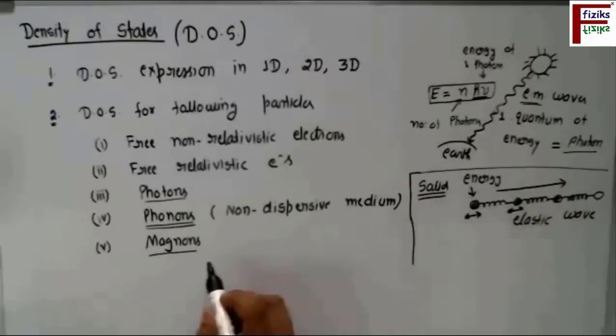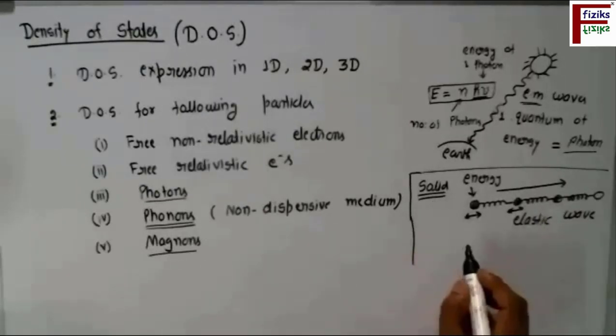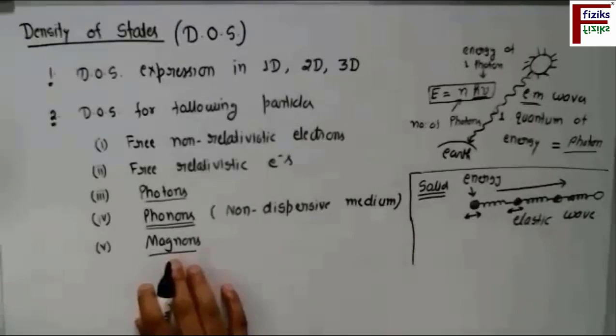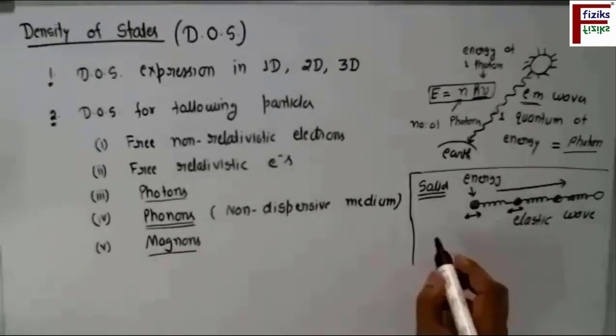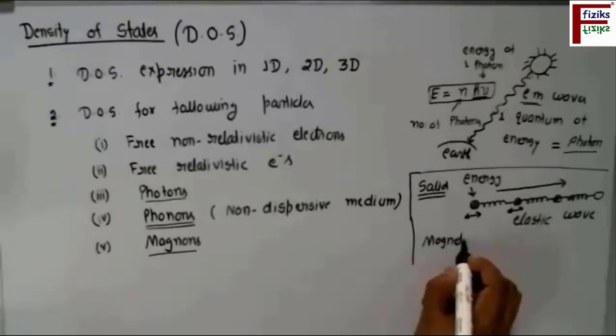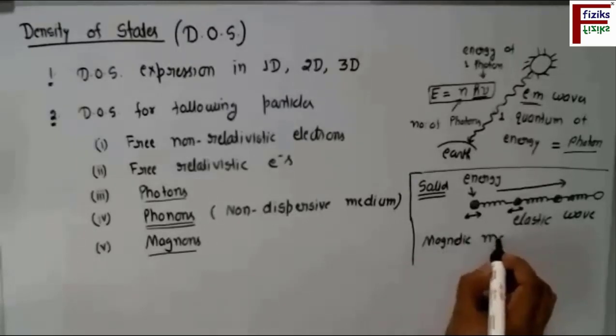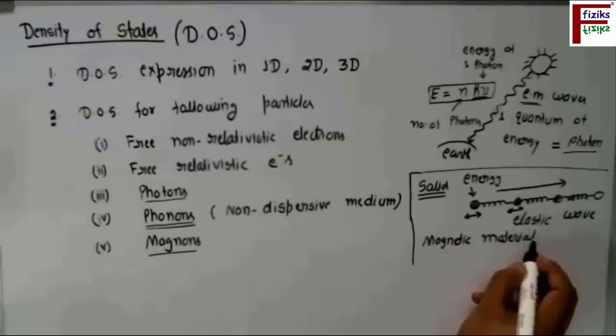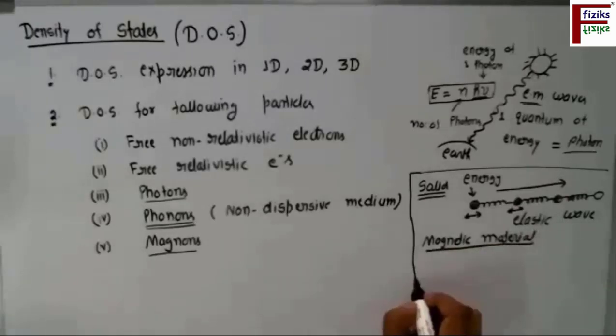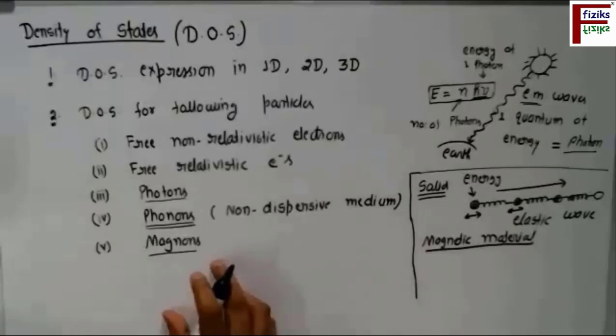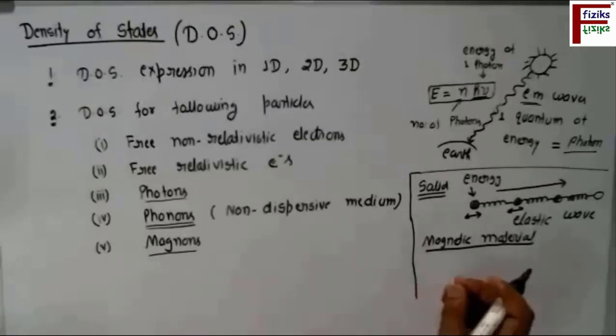Similarly, in case of solid itself, there are a class of materials called magnetic material. So in the magnetic material, for example, the case of ferromagnets, you can see that each atom acts like a magnet. So these magnets are nothing but represented by a spin.